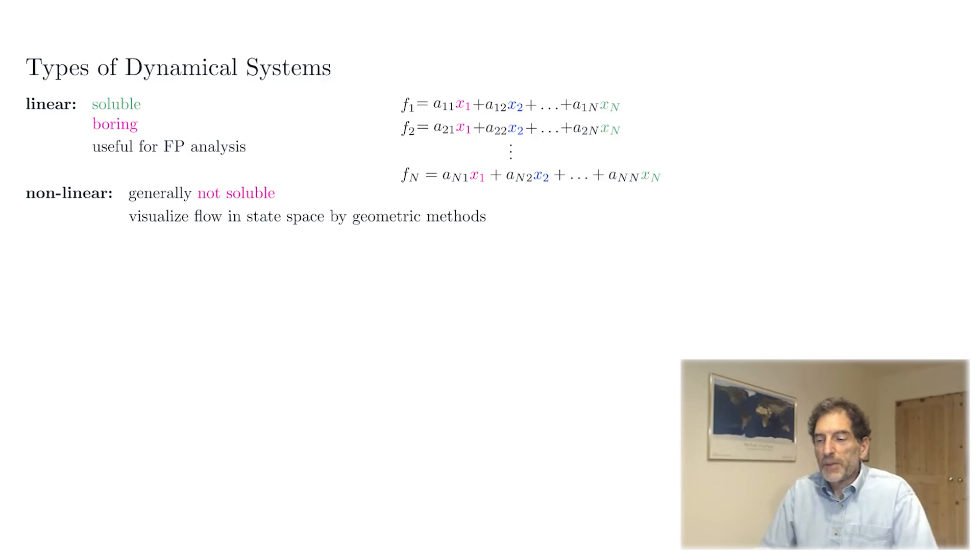Now, another feature of dynamical systems is that in addition to being categorized by linear or nonlinear, they're also categorized by the number of degrees of freedom or the number of variables, or equivalently the dimensionality of the system. And sometimes we'll use the variable D to denote this dimensionality or number of variables. If we start with the simplest case, D equals one.